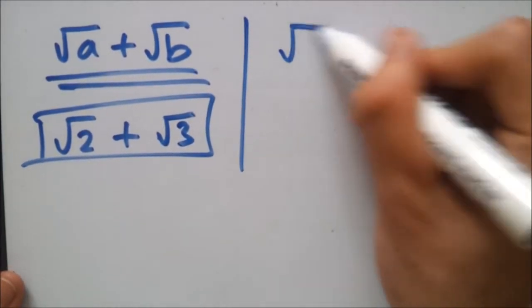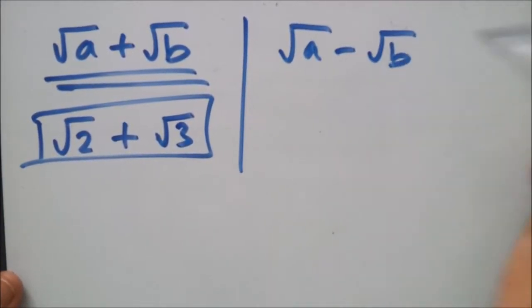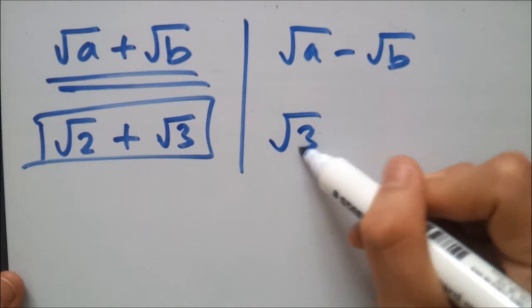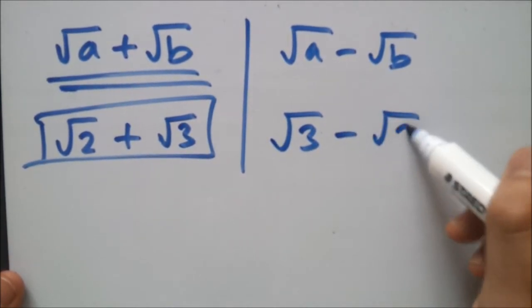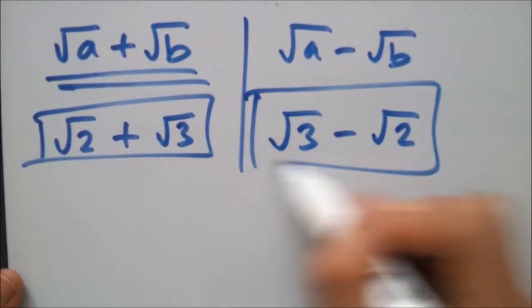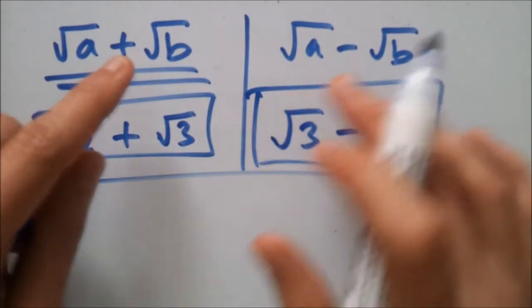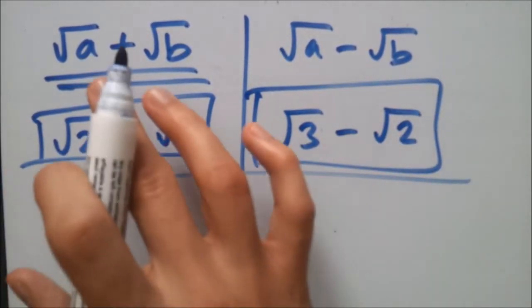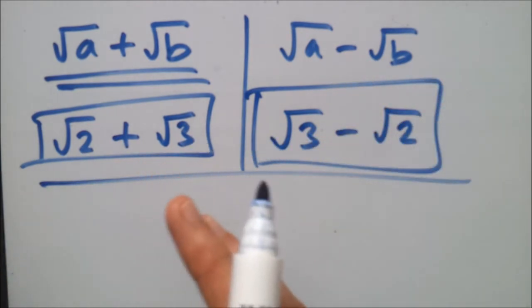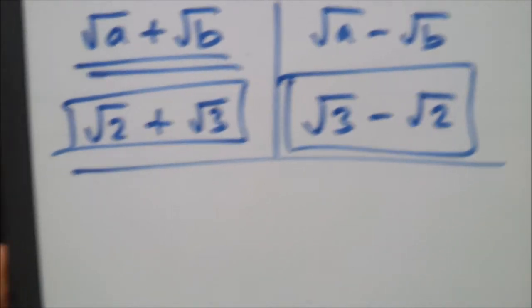Same thing with minus: root a minus root b. Root 3 minus root 2, that's it. So these two examples are trivial. When you get plus and minus you just leave it, but if you get times or divide, as shown in my last video, you actually have to solve it and simplify it.